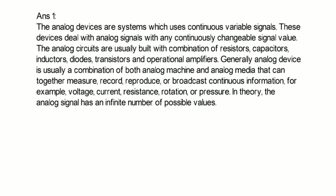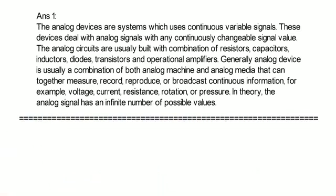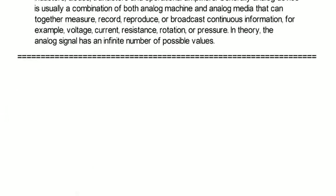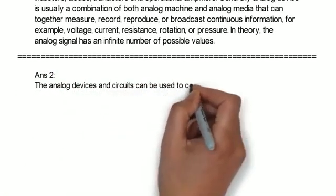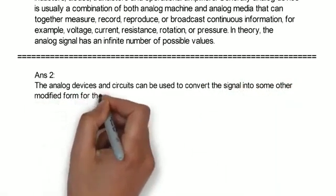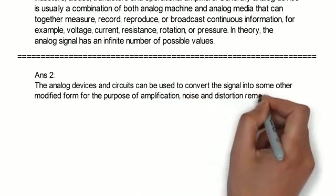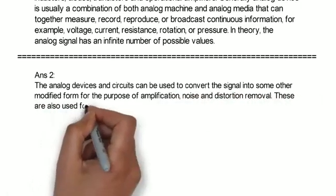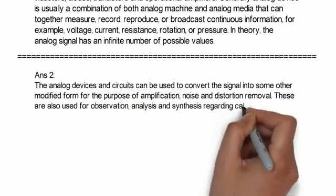Now we will study second question, what are its roles? The analog devices and circuits can be used to convert the signal into some other modified form for the purpose of amplification, noise and distortion removal. These are also used for observation, analysis, and synthesis regarding calculation of unknown circuit parameters.